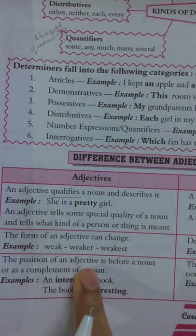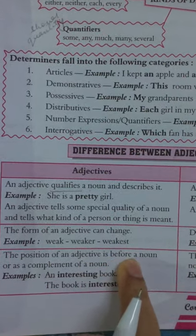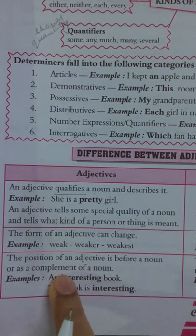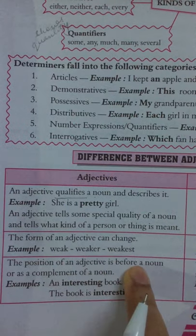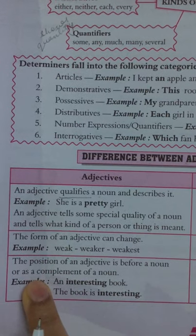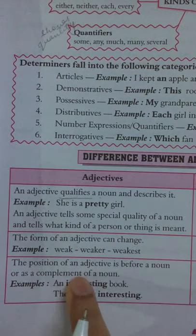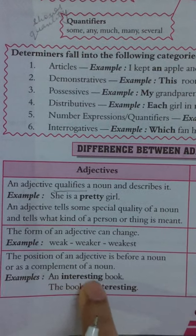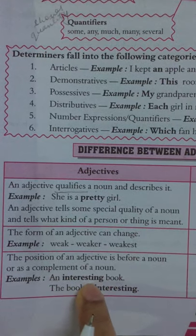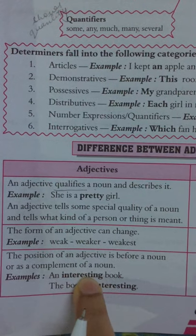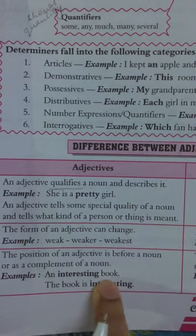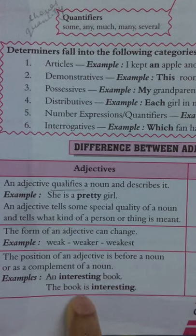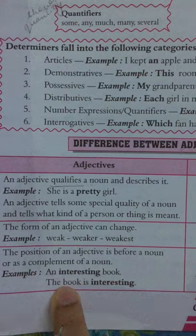The third point: the position of an adjective is usually before a noun, or it can come after the noun as a complement. For example, 'an interesting book' — the adjective comes just before the noun 'book.' Or, 'the book is interesting' — here the adjective comes as a complement, complementing the noun.